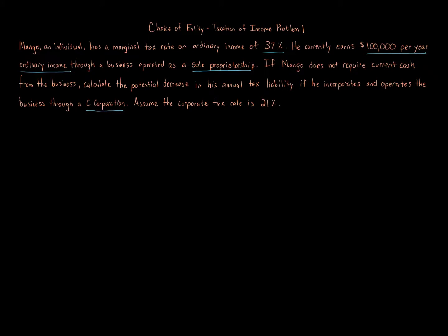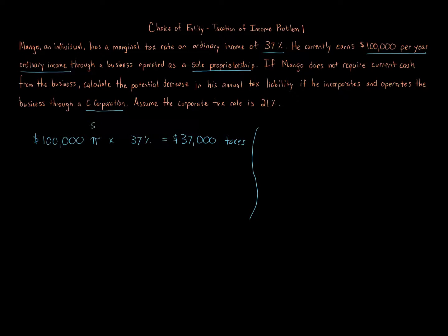What if Mango changed to a C corporation? All we're going to do here — and I can show you this multiple ways — is take the one hundred thousand dollars per year profit or income received and multiply that by the 37 percent tax rate, which is Mango's rate. We get 37 thousand dollars in taxes. That is if we continue being a sole proprietorship, which flows through to the owner just like an S corporation or a partnership, even if you don't receive the money.